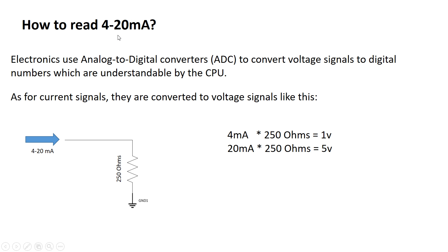But how can the microcontroller or PLC read the current signal? In electronics, we use analog-to-digital converters to convert voltage signals to digital numbers which are understandable by the CPU. Now, as for current signals, they are converted to voltage signals like this. This is the measuring device - it has a 250 ohm resistor. Now when 4 milliamps times 250 ohms equals 1 volt, and 20 milliamps times 250 ohms equals 5 volts, and this goes to the analog-to-digital converter for conversion.